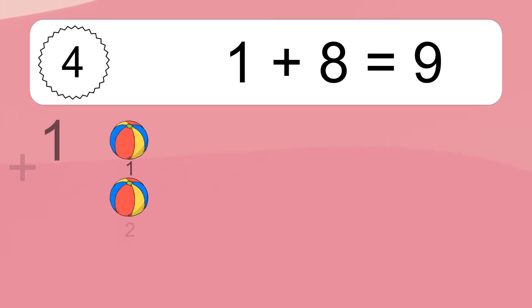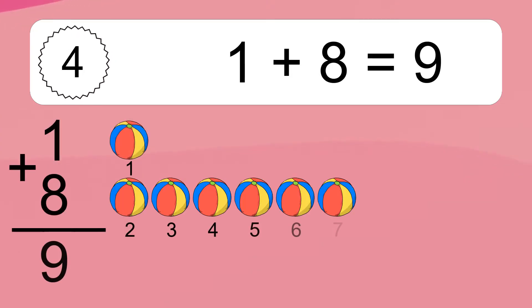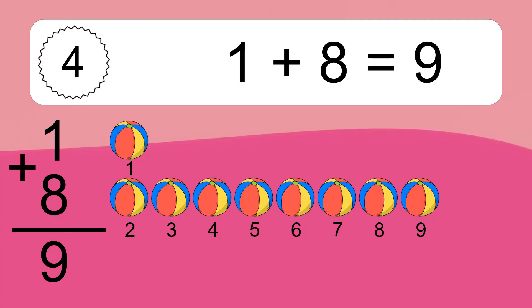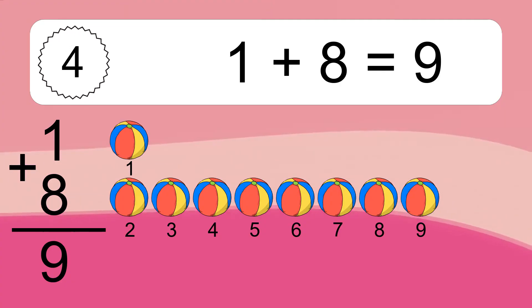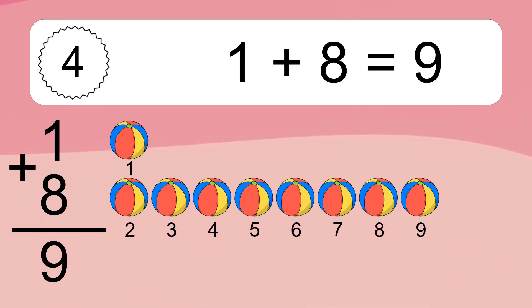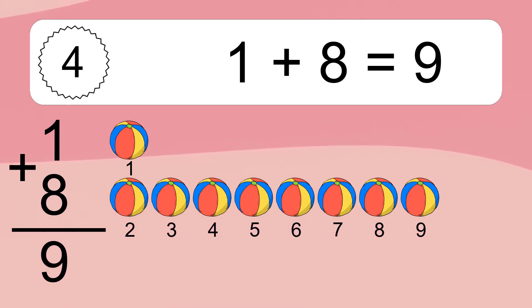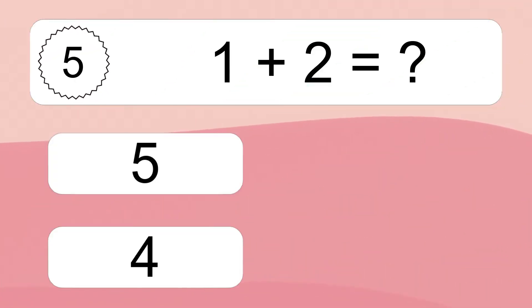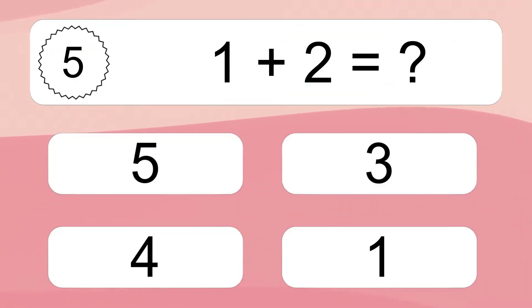1 plus 8 equals 9. Let's count it: 1, 2, 3, 4, 5, 6, 7, 8, 9. 1 plus 7 equals what?